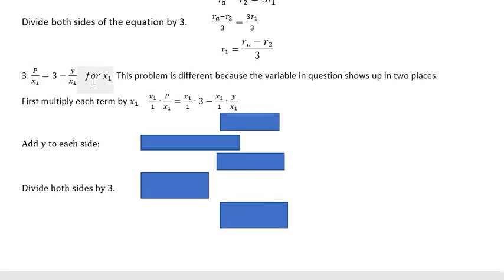Finally, we have the third problem. This one is different because the variable in question shows up in two places. We want to solve for X sub 1. But that's not a problem because once we multiply both sides by X sub 1, you can see that it's going to cancel it off on this term on the left. It's going to cancel it off on the term on the right. And the only one that's going to be left is the 3 times X sub 1.